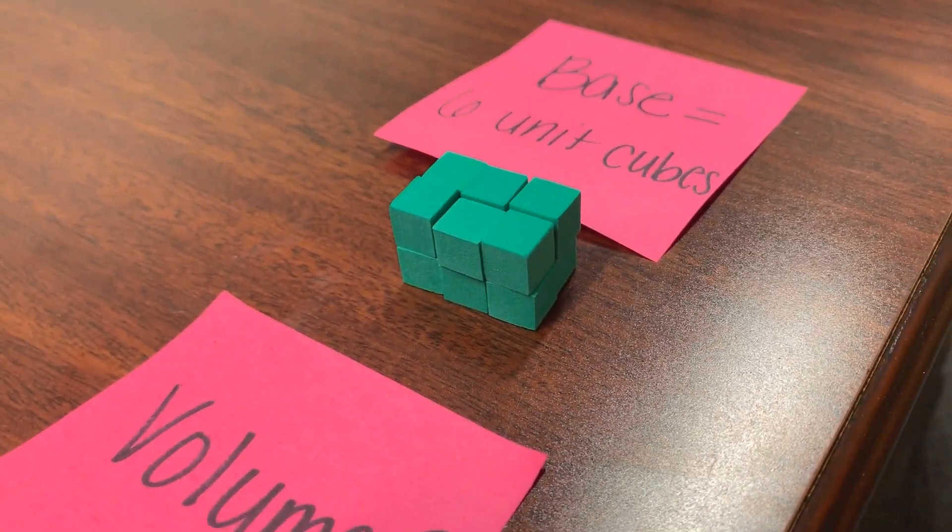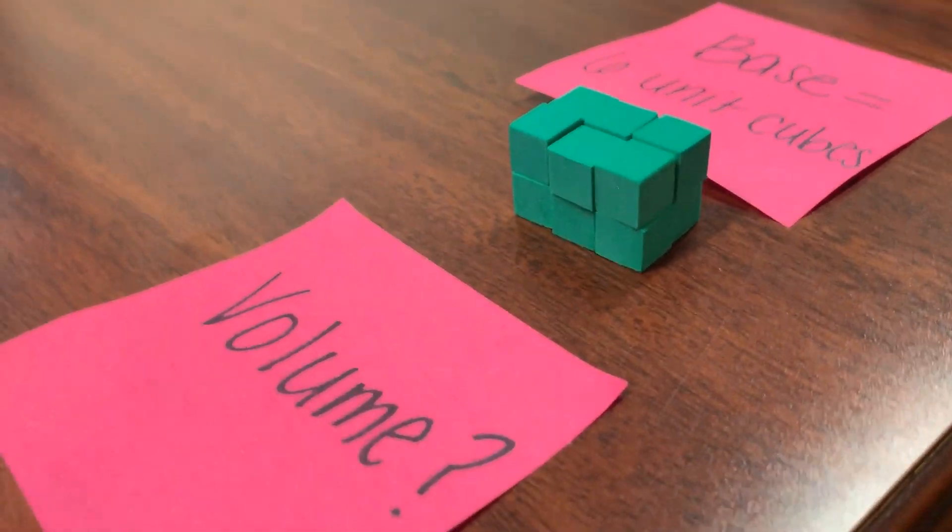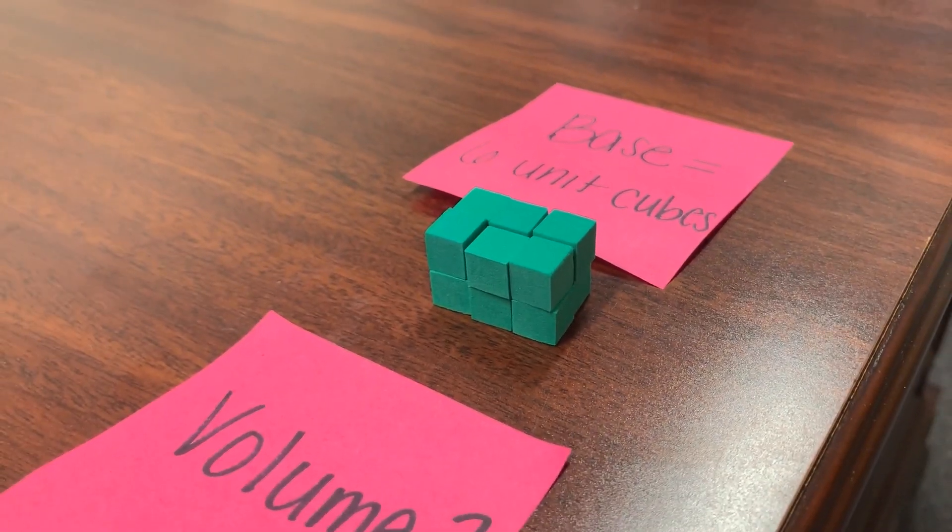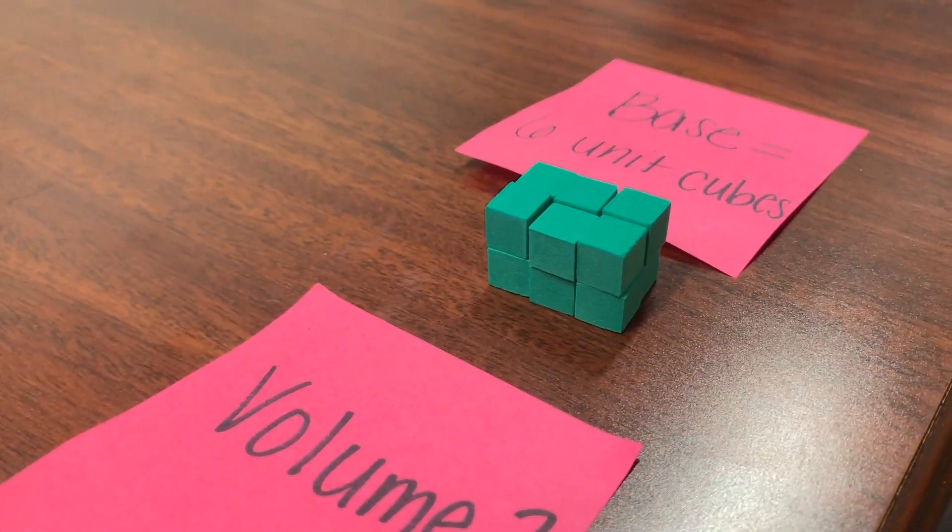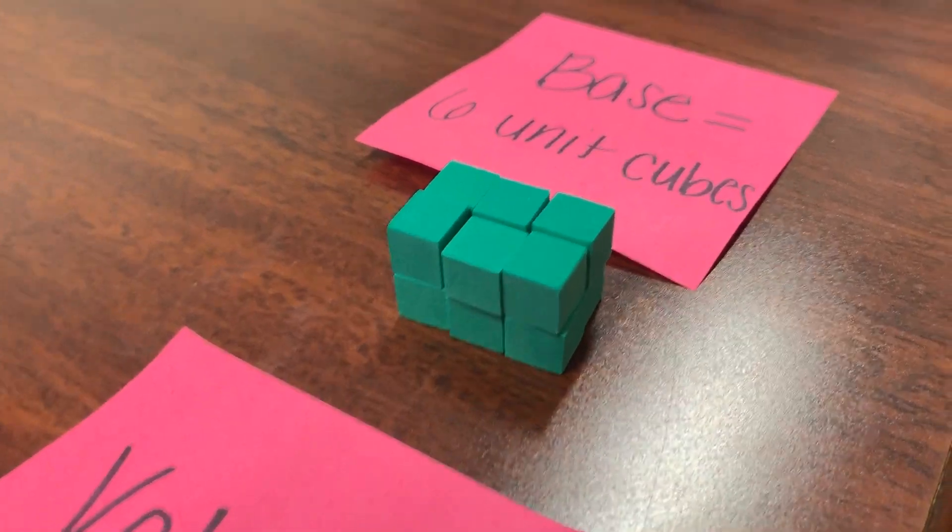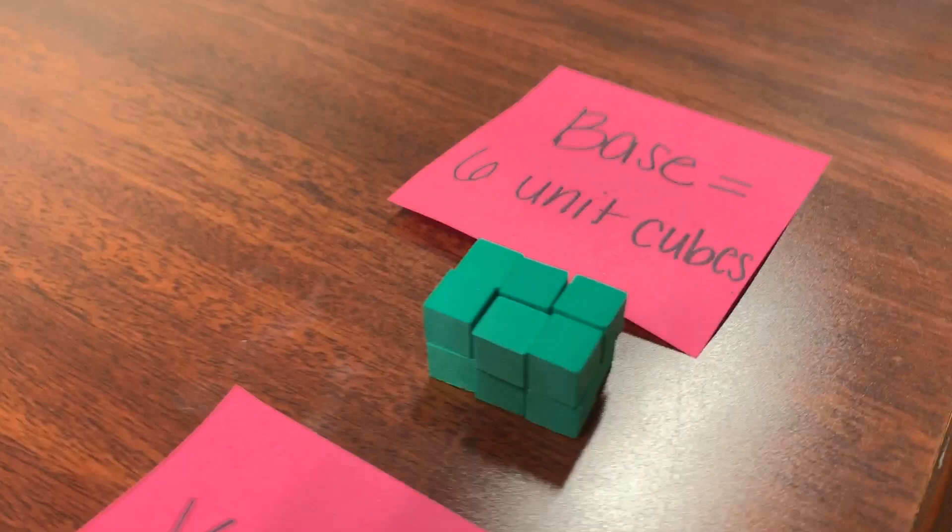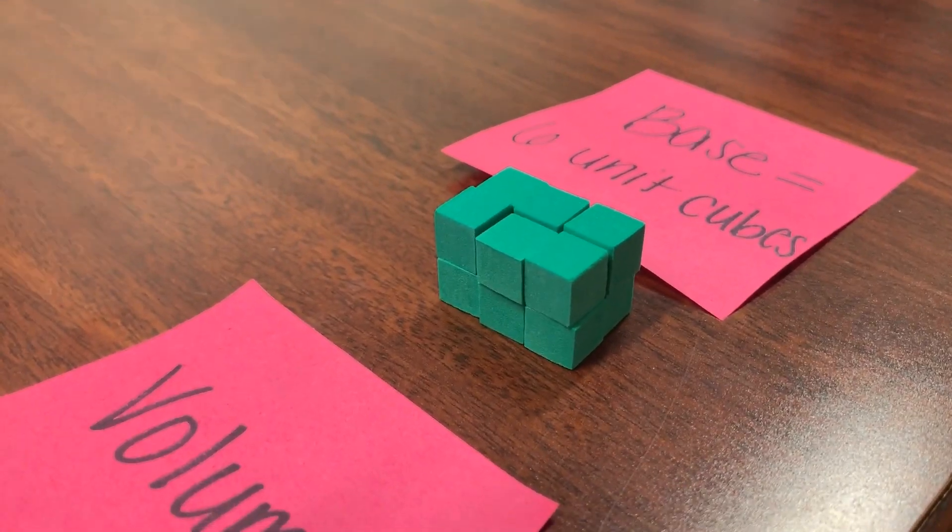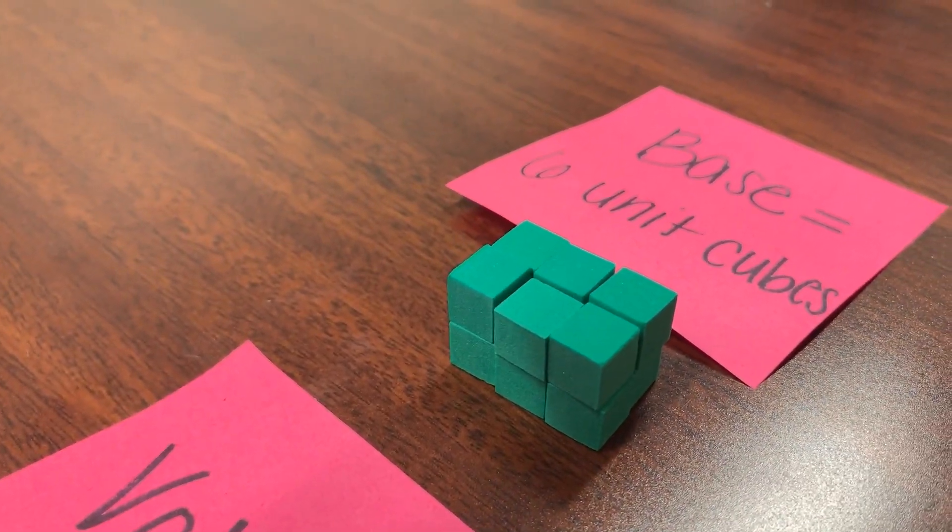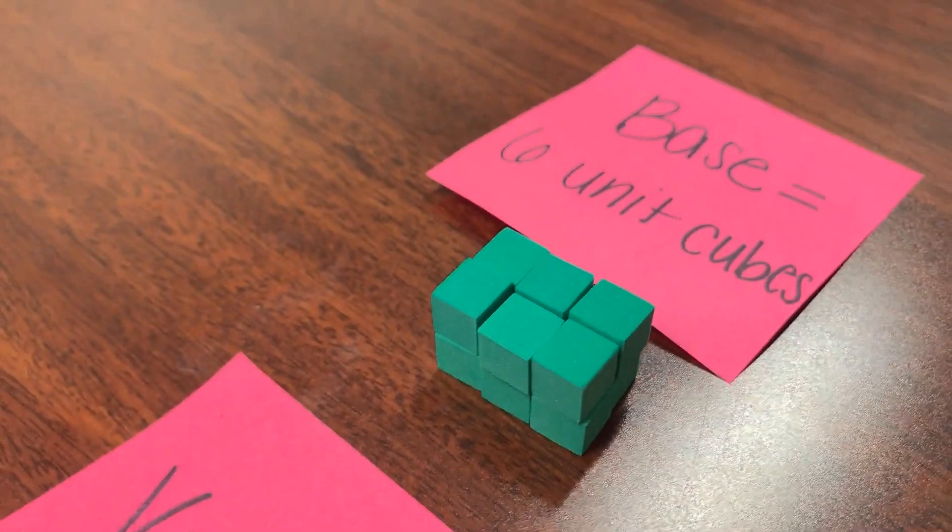Now I have two layers of six unit cubes. So two layers of six is six plus six, 12. It is. So the total volume here is 12 cubic units, which was what I wanted. I wanted 12 cubic units to be my volume. Two layers of six unit cubes makes 12 cubic units.